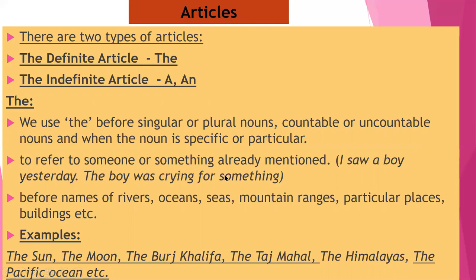Next, we use 'the' to refer to someone or something already mentioned. For example: 'I saw a boy yesterday.' Here I am talking about a boy whom I saw yesterday — this is the first time I am talking about this boy. Now in the second sentence: 'The boy was crying for something.' So in the second sentence I am using the same word, referring to the boy I have already mentioned. When I use it the first time, I use 'a', but when I use it the second time, I use 'the'.